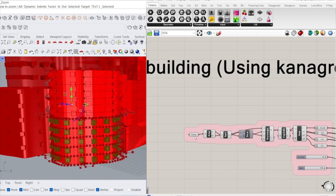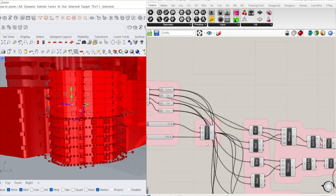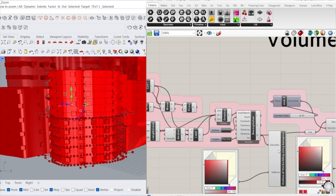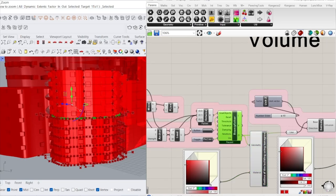And the upper structure is basically, we have the kangaroo solver. I extracted the exact curvature of the building.